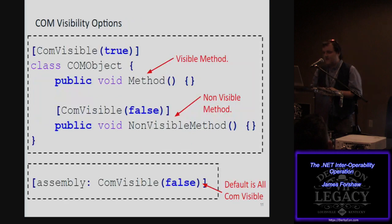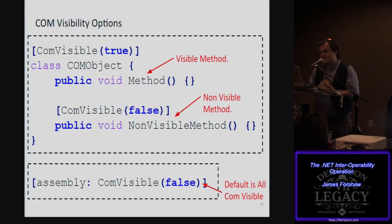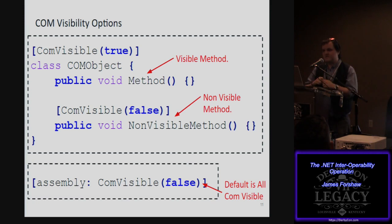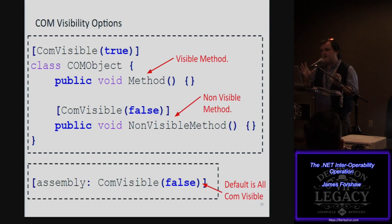One thing you need to do when exposing COM objects from a .NET library is mark them as COM visible using the COM visible attribute. You can mark COM visibility at the class level or at the assembly level. Interestingly, if there's no attribute at all, the default is to make everything COM visible. So if you compile a simple .cs file with no assembly-level attributes, every public class in that assembly would be COM visible in theory.